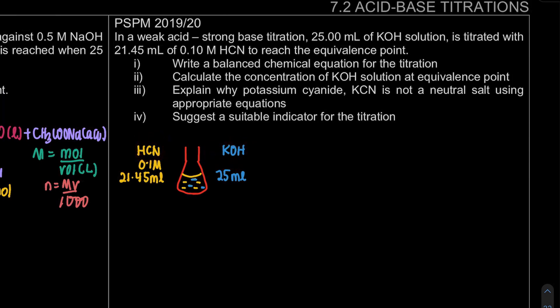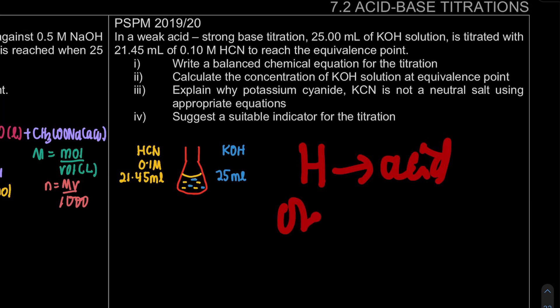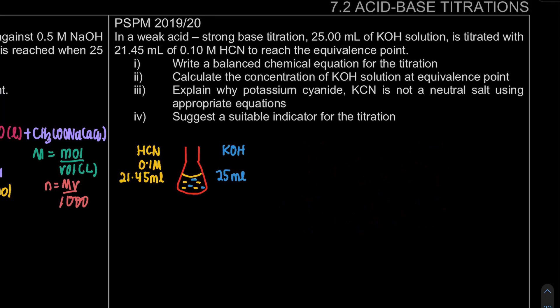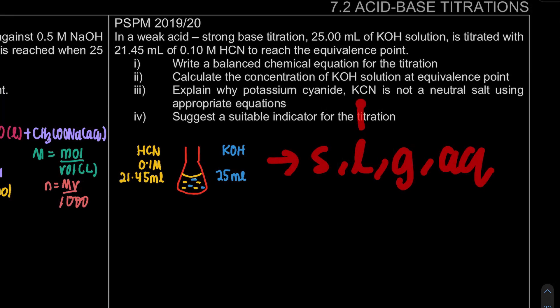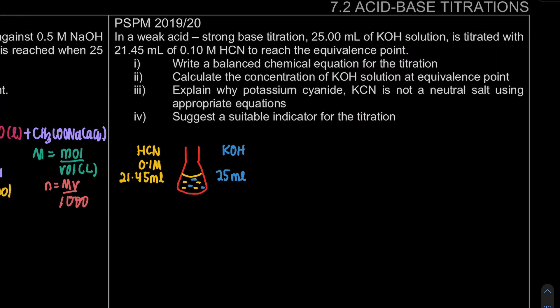First what I would like to draw is actually the conical flask with my acid and base solution. This is the information that we have. The question asks to write the balanced chemical equation. Let us write down. Make sure since this is our acid, this is our base. For the titration question, it's quite simple. If we have H, it will be acid. If we have OH, that solution will be our base.